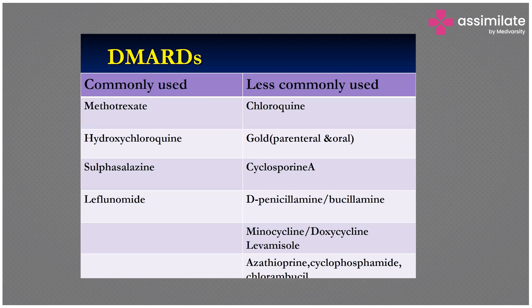Less commonly used DMARDs include chloroquine, parenteral and oral gold, cyclosporine A, and d-penicillamine. Gold therapy works by reducing cytokine expression of macrophages, inhibiting antibody production, and reducing adhesion molecules. However, because gold is toxic, it is no longer commonly used.